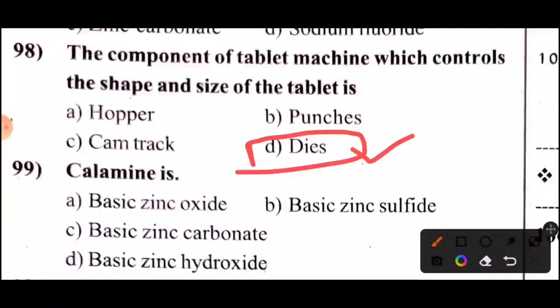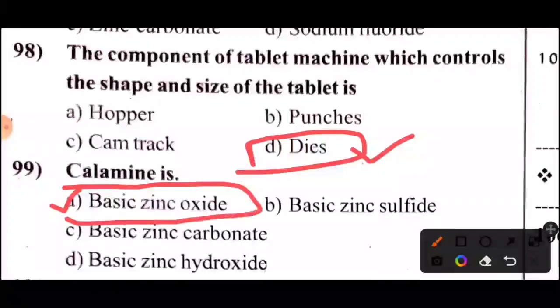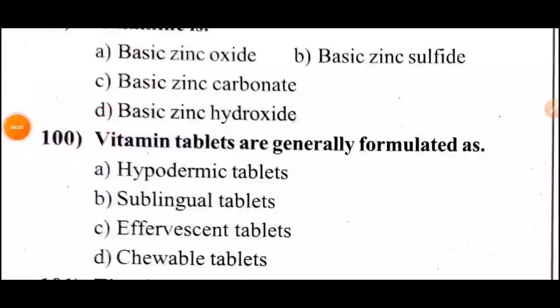Question 99: Calamine is — Option: Basic zinc carbonate.